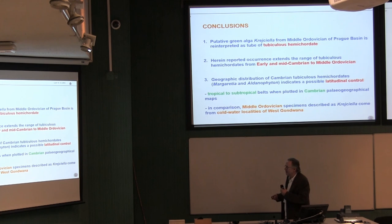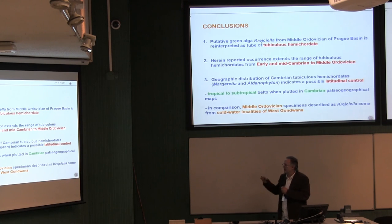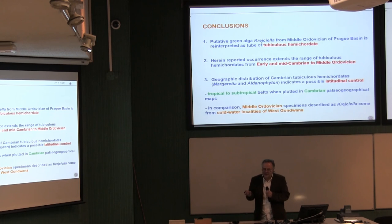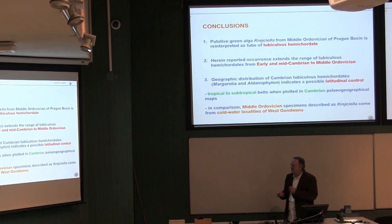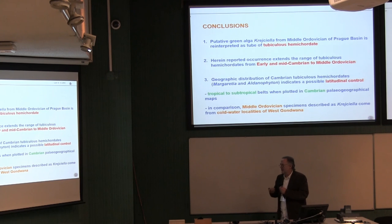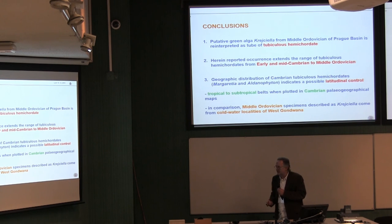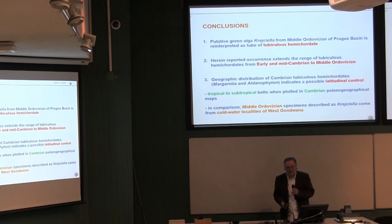As a summary: this putative green alga Critchella from the mid-Ordovician Prague Basin is in reality a typical hemichordate. Hemichordates producing these types of envelopes range at least to the Middle Ordovician. From a paleogeographical point of view, there is apparently a latitudinal control for the Cambrian occurrences, but we have a different environment for the mid-Ordovician presence of these Critchella-type structures in the Prague Basin. Thank you for your attention.